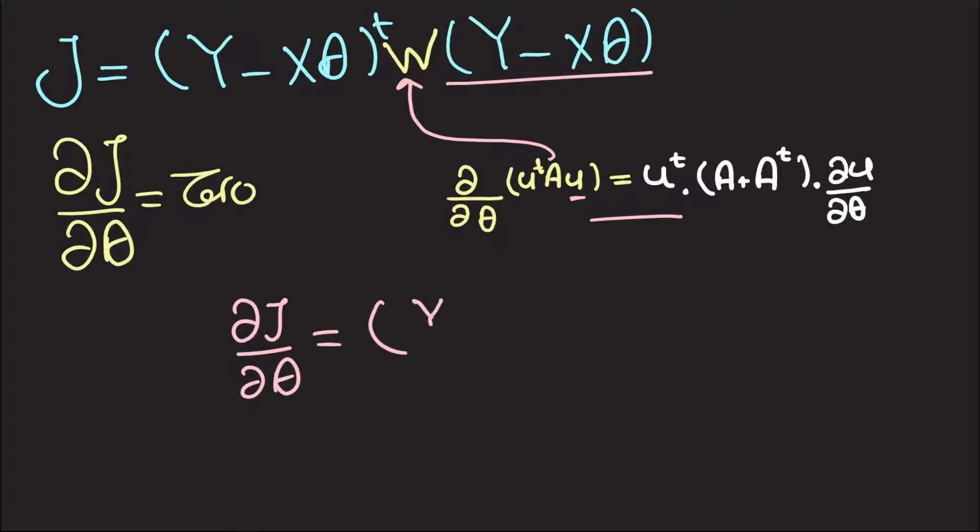So y minus x theta transpose multiplied by w plus w transpose multiplied by partial over partial theta of y minus x theta.